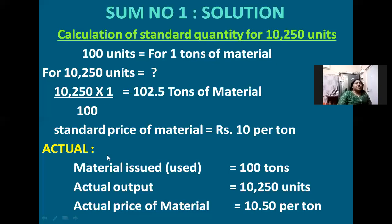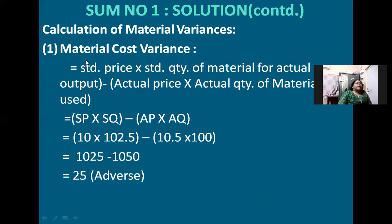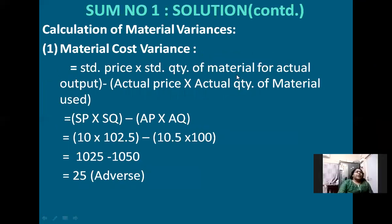Now let me check the information regarding the actual figures. The material issued was 100 tons (actual quantity). The actual output is 10,250 units. The actual price of material is rupees 10.50 per ton. The formula for material cost variance is: standard price into standard quantity for actual output, minus actual price into actual quantity — in short form, SP × SQ minus AP × AQ.